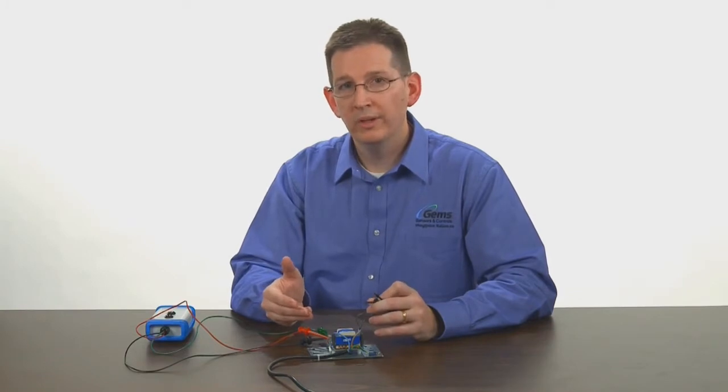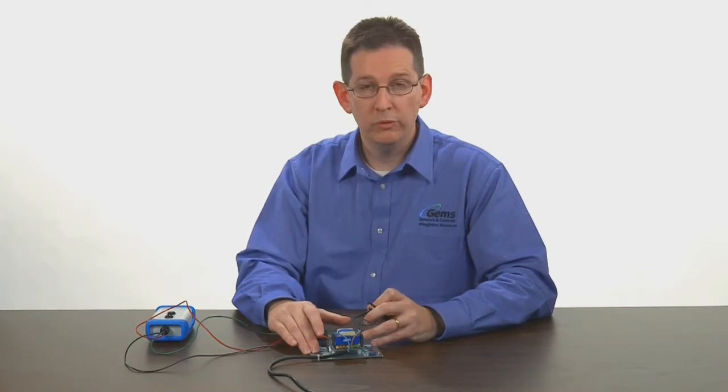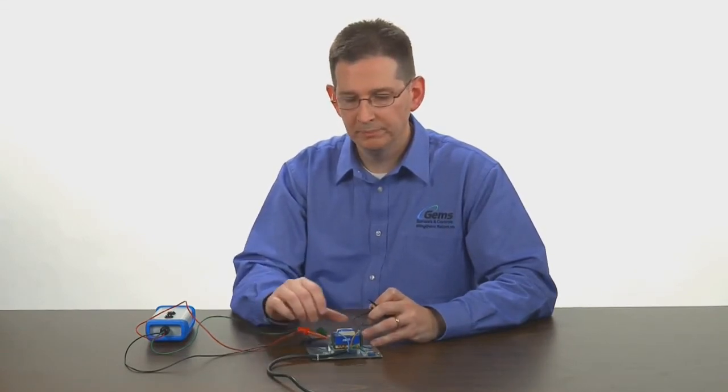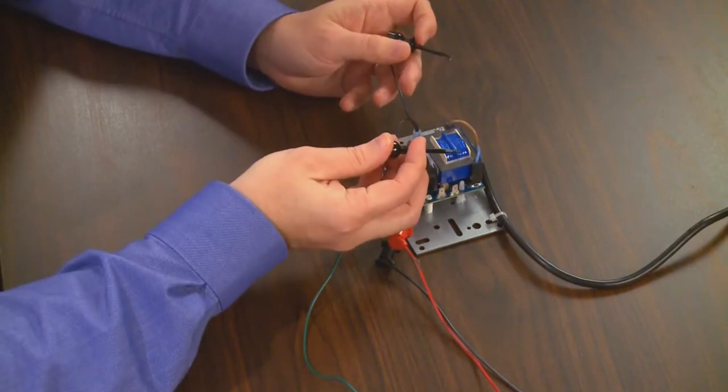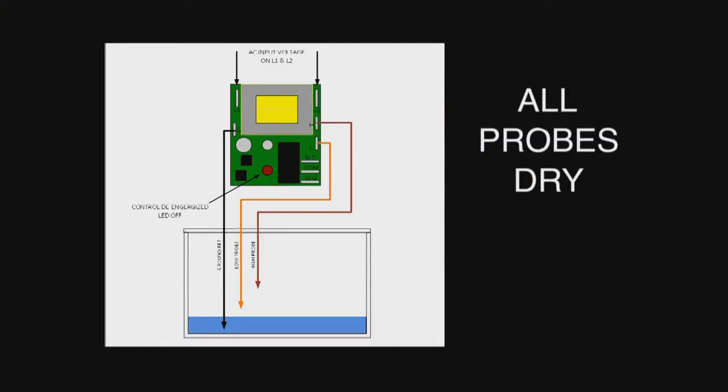The direct mode indicates that it will operate when probes become wet and de-energize when probes are dry. To do this we bring in our AC power to the two line voltages and we use a series of jumpers to simulate either single level service or differential service.